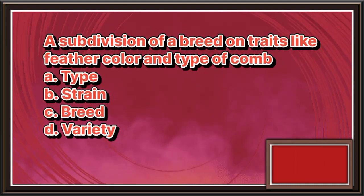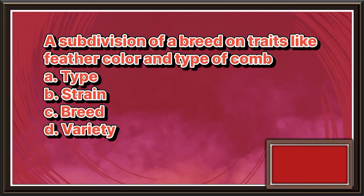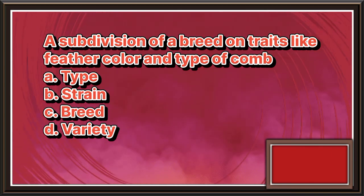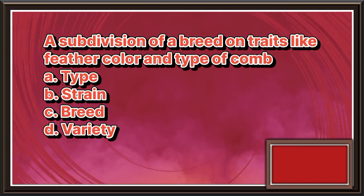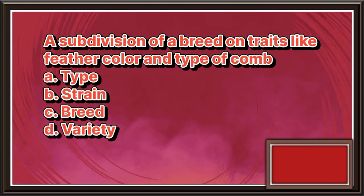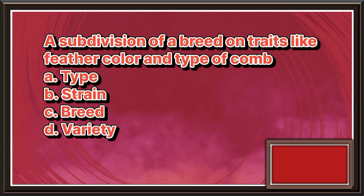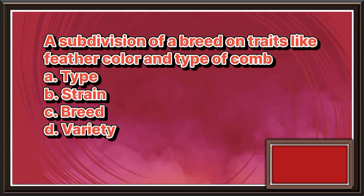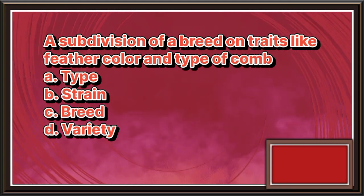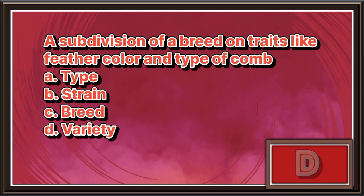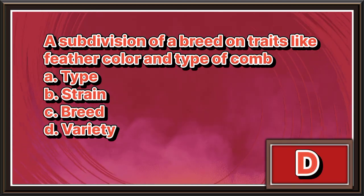A subdivision of a breed on traits like feather color and type of comb. A. Type. B. Strain. C. Breed. D. Variety. The answer is letter D.